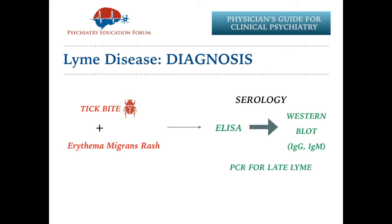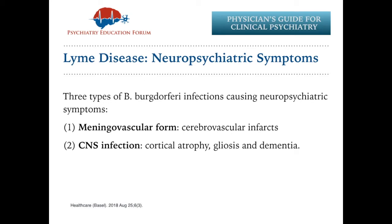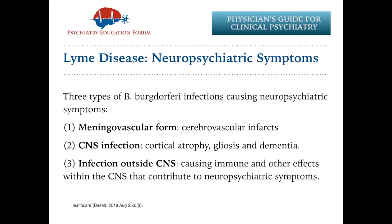Now let's talk about neuropsychiatric symptoms associated with Lyme disease. There are three types of infection-causing neuropsychiatric symptoms: the meningovascular form, which causes infarcts; CNS infection inside causing cortical atrophy, gliosis, and dementia; and infection outside the CNS, which can also contribute to neuropsychiatric symptoms. I looked at many studies but was not able to find detailed individual studies on each symptom, so I will name these symptoms and talk briefly about them.